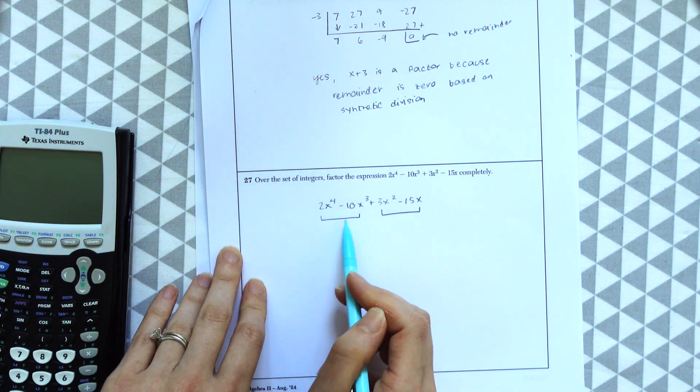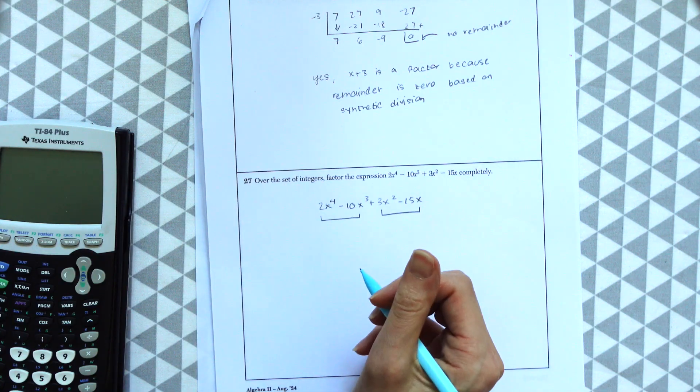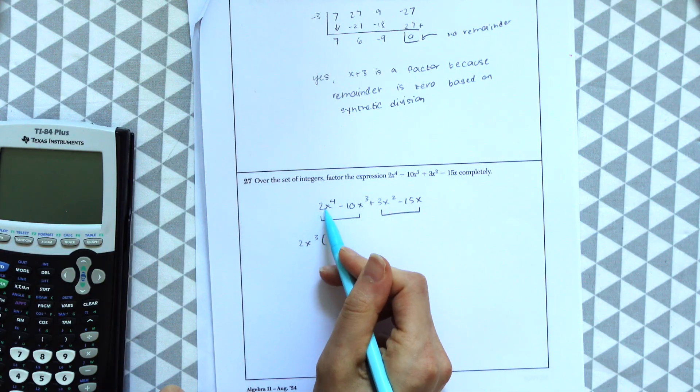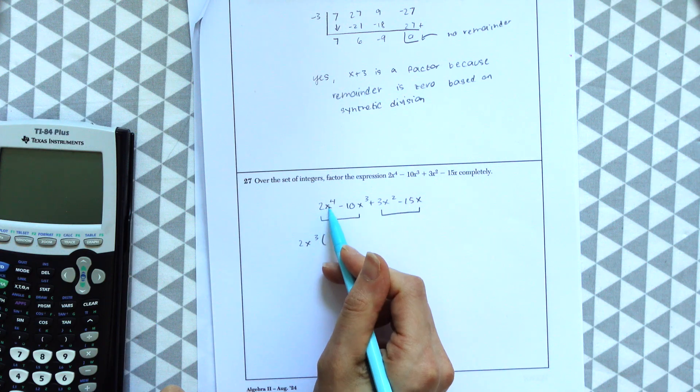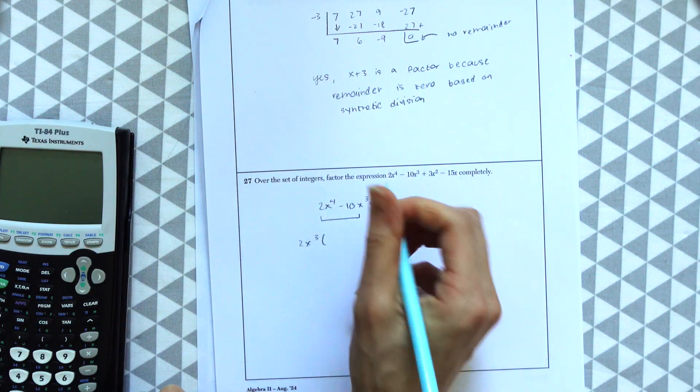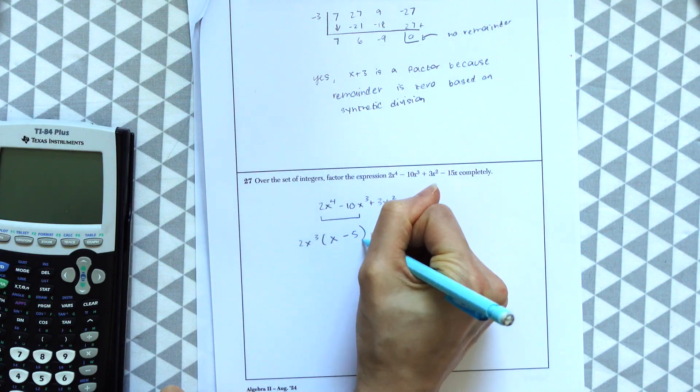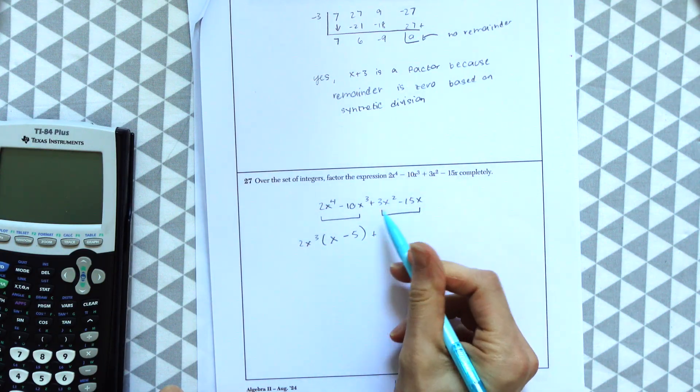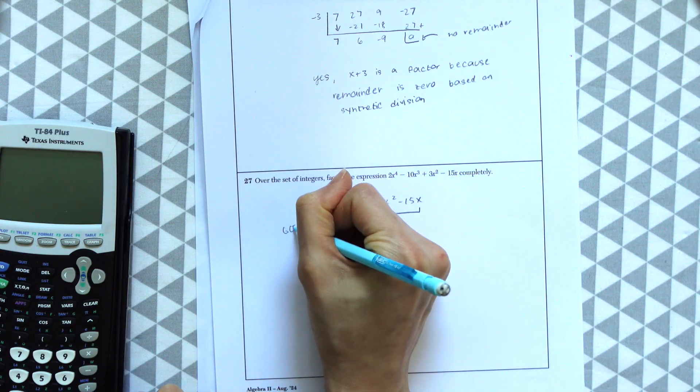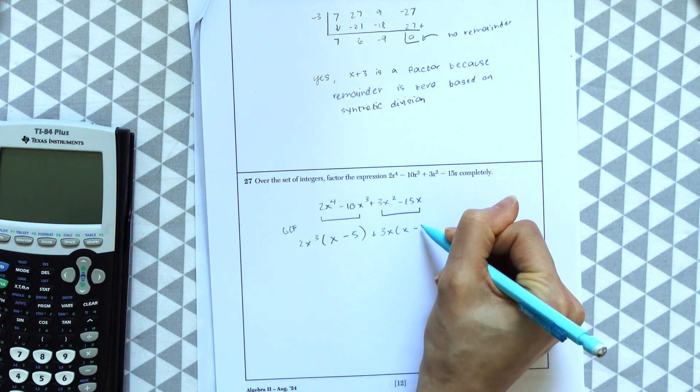So I'm going to split this up and then take the greatest common factor of each little unit we have here. If we just look at 2x to the 4th minus 10x cubed, what's the greatest common factor we could take out? That would be 2x to the 3rd. So then we're dividing out 2x cubed and seeing what's left. We're only going to have an x left, and then over here we're only left with a 5.